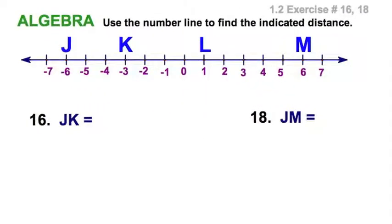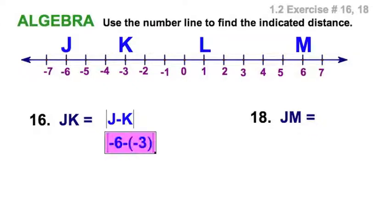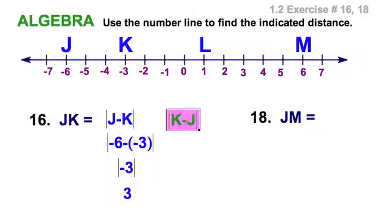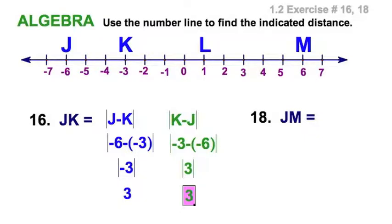Now let's find some distances using a number line. As we said earlier, two letters JK stands for the measure of segment JK, or the distance between the two points. I could take the coordinate value of J and subtract K — that gives negative six minus three. By definition, the distance is an absolute value, so the absolute value of negative nine is of course... wait — simplifying, the absolute value of negative three is three. You could also take K minus J: negative three minus negative six, and the distance is still three.